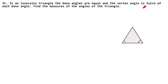The vertex angle is twice each base angle. The question says that the vertex angle is twice — whether this angle is twice or this angle. So the vertex angle is twice. Find the measure of the angles of the triangle.